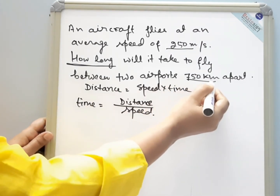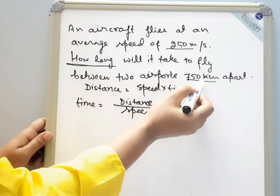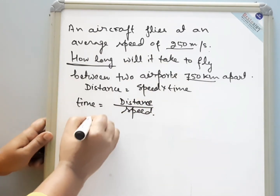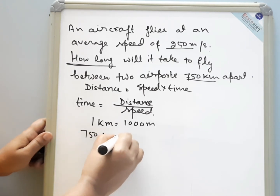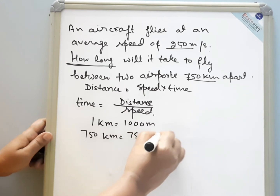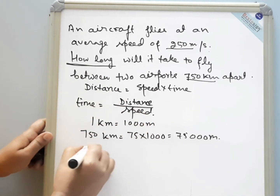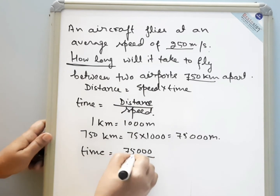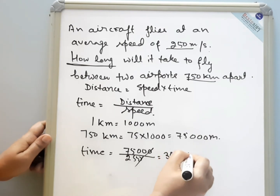Distance is given in kilometers and speed is given in meters per second, so we have to convert kilometers into meters. 1 kilometer is equal to 1000 meters, so 750 kilometers will be equal to 750 into 1000, that is 750,000 meters. Now we put this value in the formula: time equals 750,000 divided by 250 meters per second. The answer will be 3000 seconds.